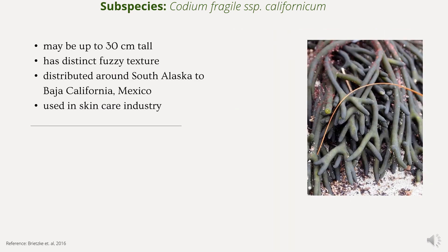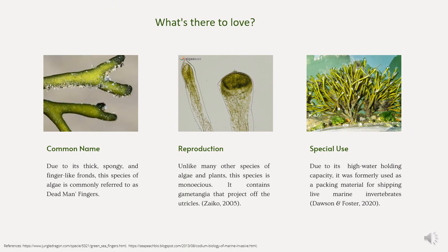Finally, we will be talking about Codium fragile subspecies californicum. It may be up to 30 centimeters tall, has a distinct fuzzy texture, and is distributed from South Alaska to Baja California in Mexico. Moreover, it is often used in the skincare industry.